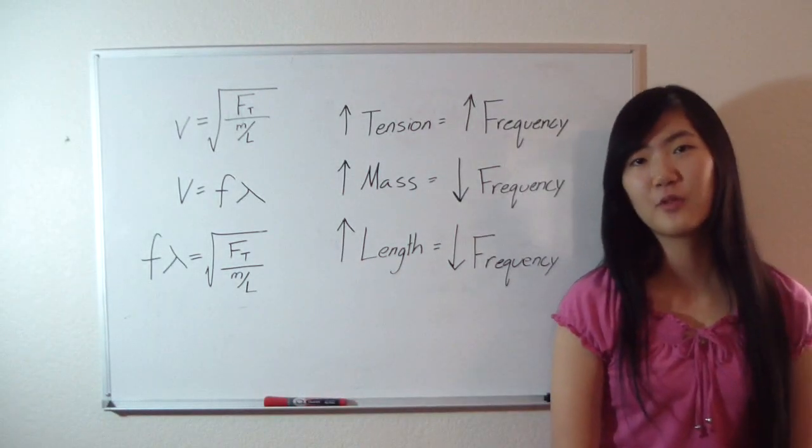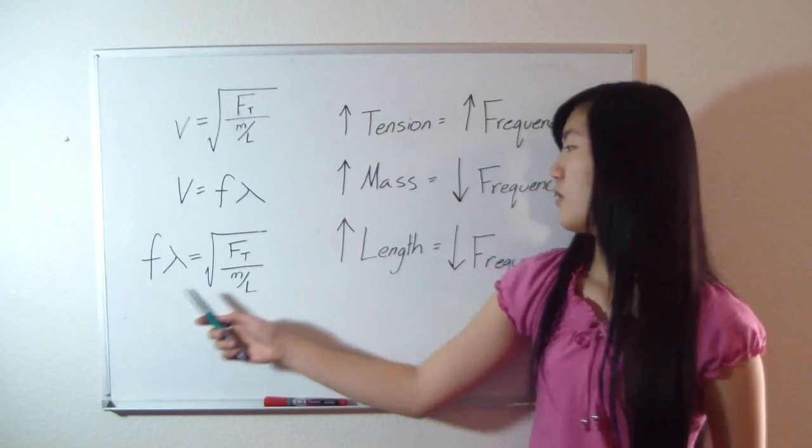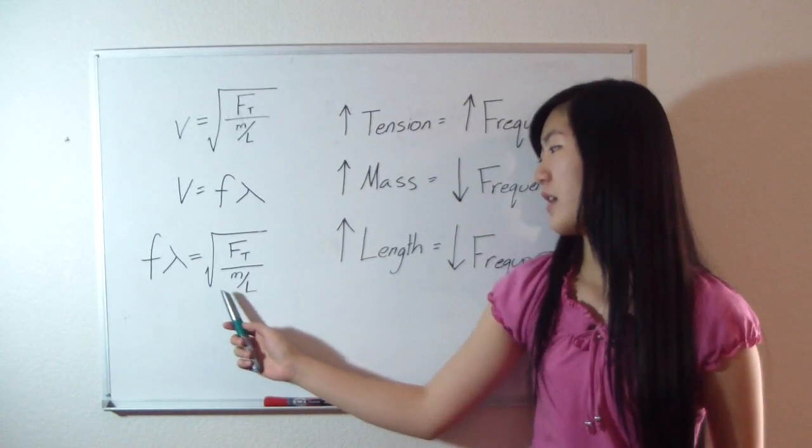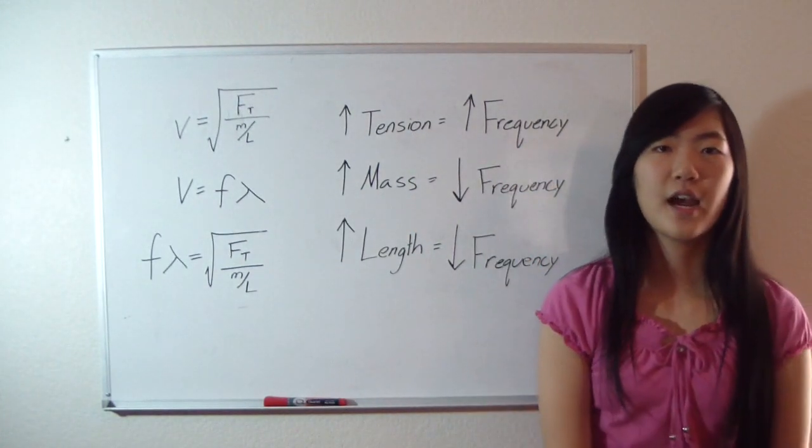The speed of a wave can be represented by these two equations, and when substituting, you can see that frequency is related to the tension or force, the mass, and length of a string. As the tension gets higher, so does the frequency, which results in a higher pitch.